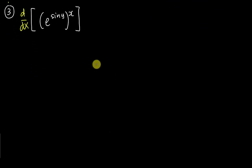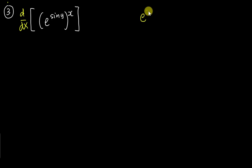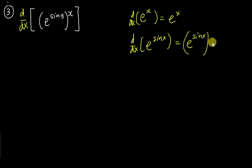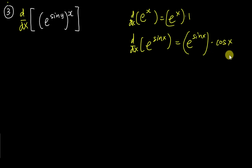Now let's go to the last one, which is the exponent question. Let's revise a little bit on the exponent. If you differentiate eˣ, you get back eˣ. So if you differentiate e^(sin x), for e the power never changes — we copy sin x — and then differentiate the power: sin x gives cos x. So the answer is e^(sin x)·cos x.